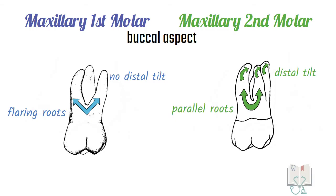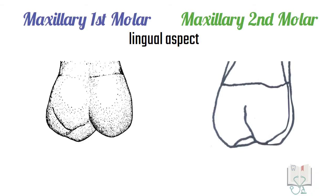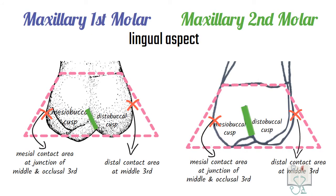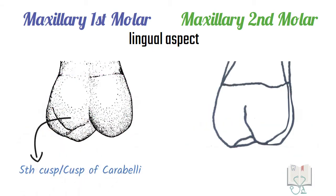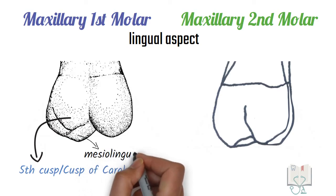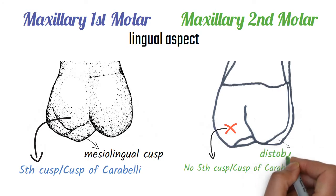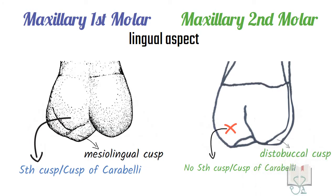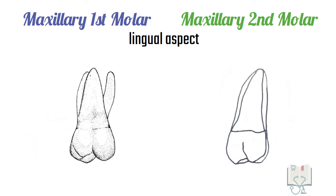Moreover, roots in the second molar have a distal tilt which is not seen in the first molar. Next, the lingual aspect: like the buccal aspect, the majority of features are the same in both molars, but a big difference is the presence of the fifth cusp, or cusp of Carabelli, on the mesiolingual cusp in the first molar. No such cusp is present in the second molar. Apart from this, a partial distobuccal cusp is also seen in the second molar but not in the first molar.